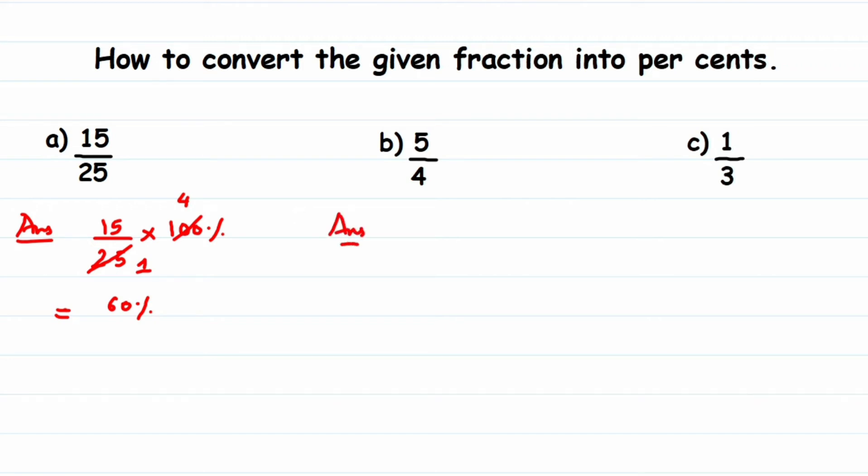Here we have 5 upon 4. We're converting into percent, so multiply by 100 percent. Now do the cancellation if possible. We can cancel 4 and 100. Again I'm going to cancel directly: this is 4 ones, and then 4 twenty-fives. Now the rest of the numbers you have to multiply.